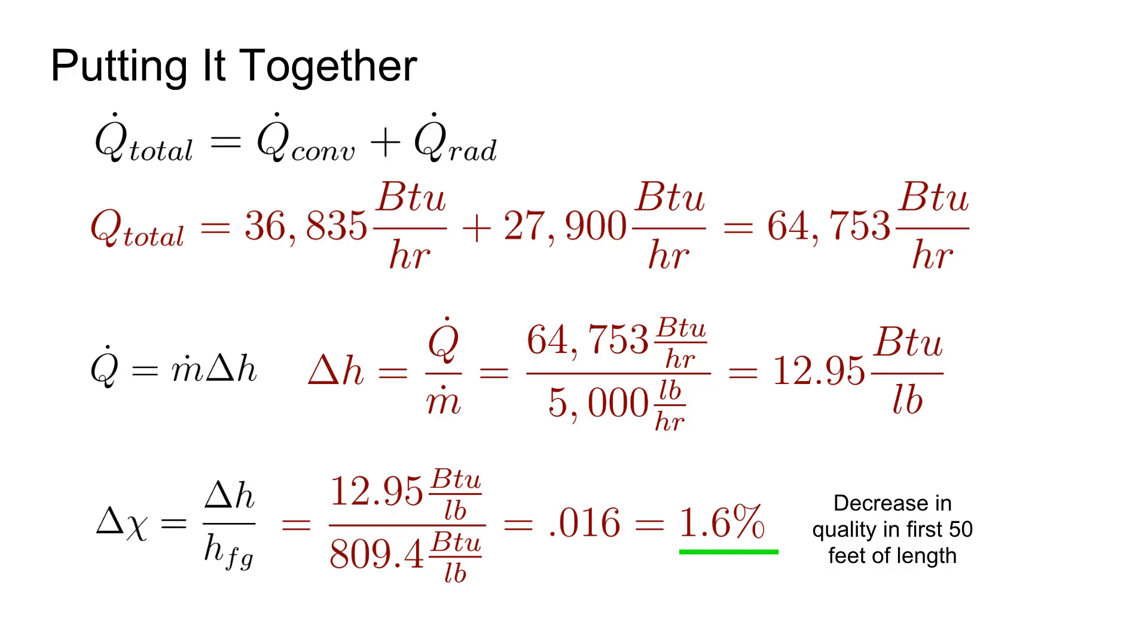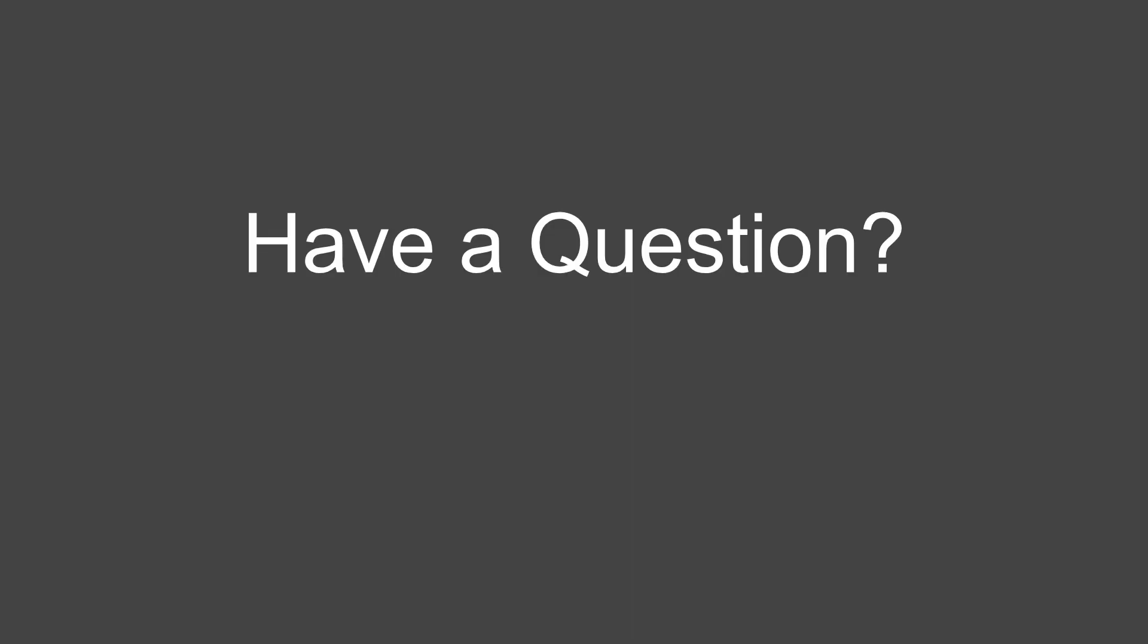In summary, the main takeaways from this problem were, one, recognizing which modes of heat transfer are in play. Convection was obvious, but radiation was less obvious, and also made a significant contribution to the total heat loss. And two, classifying the convection as natural convection, and subclassifying based on the range of the product of the Prandtl and Grashoff numbers to select the appropriate simplified equation for finding the film coefficient H. All right guys, hope you enjoyed this problem.